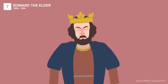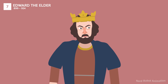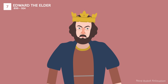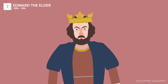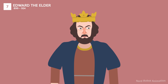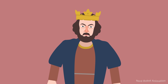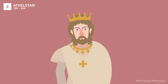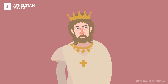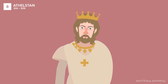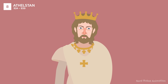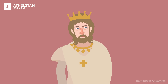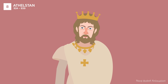Edward the Elder continued his father Alfred's work of defending against Viking invasions and consolidating control over England. His reign saw the expansion of Anglo-Saxon territory. Athelstan, considered the first true king of all England, defeated a coalition of Scots, Vikings, and others at the Battle of Brunanburh. His reign is noted for its legal reforms and strong central governance.